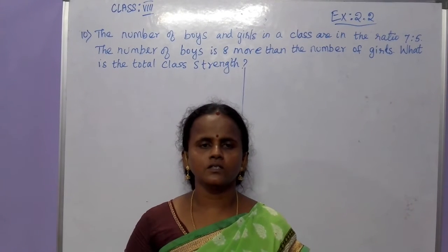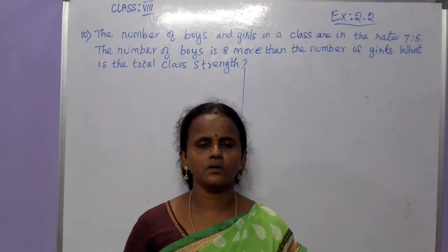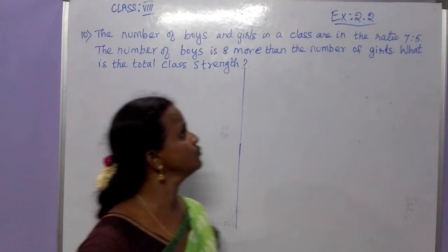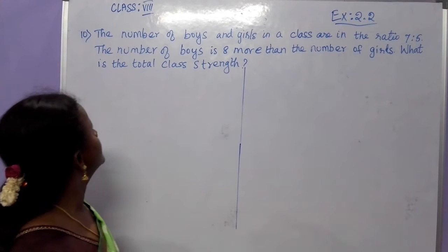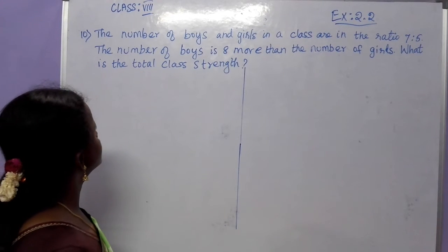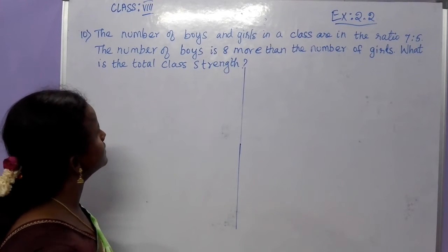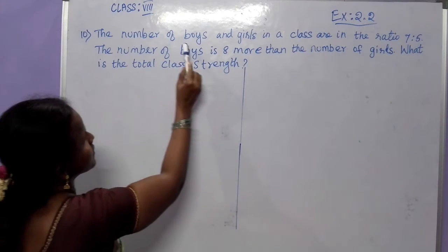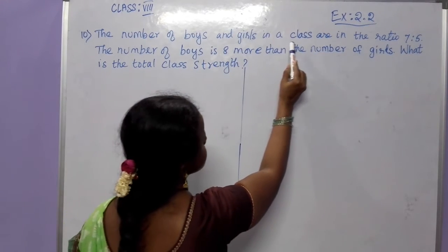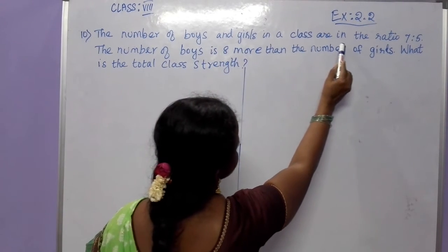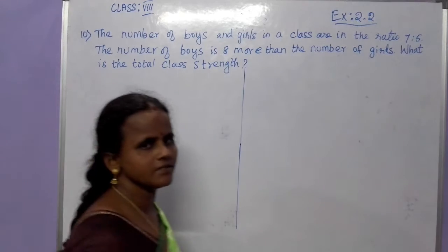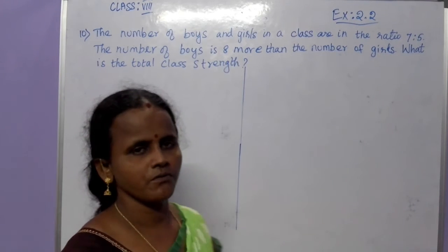Hi everyone, today we are going to see exercise number 2.2, 10th sum. Let us read the question first. The number of boys and girls in the class are in the ratio 7 is to 5.